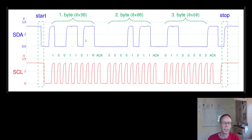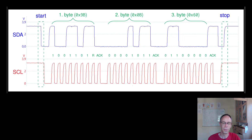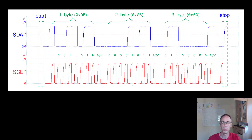Here we have an example communication for an LM73 sensor. We can see a read communication with the read bit set, the sensor address, and the sensor giving acknowledgment and sending two bytes. For our MCP9808 sensor, it works a bit differently — we first have to make a write command to set the pointer to the temperature register, and then we can read out the data. We can set a lot of settings on the sensor, but for now we just want to read out the temperature.